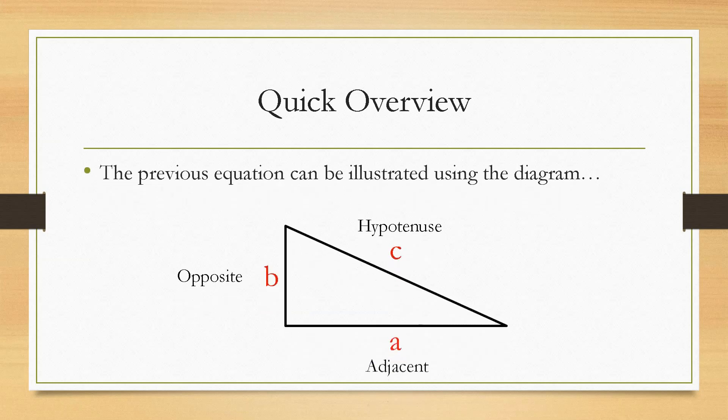So, c is the hypotenuse which is always the longest side. b which is the opposite and a which is the adjacent. Now a and b can be interchangeable. The one key constraint is that c must be the longest side, i.e. the hypotenuse.